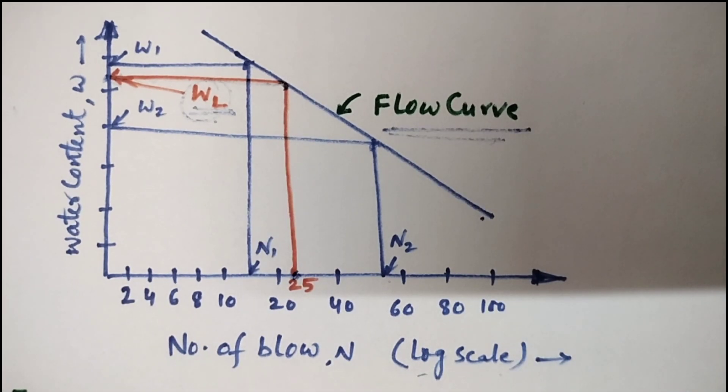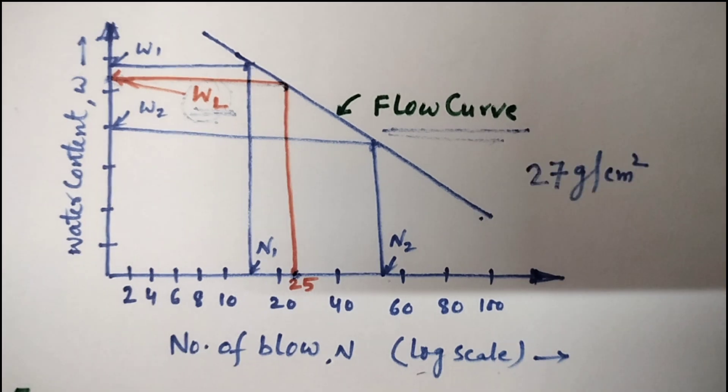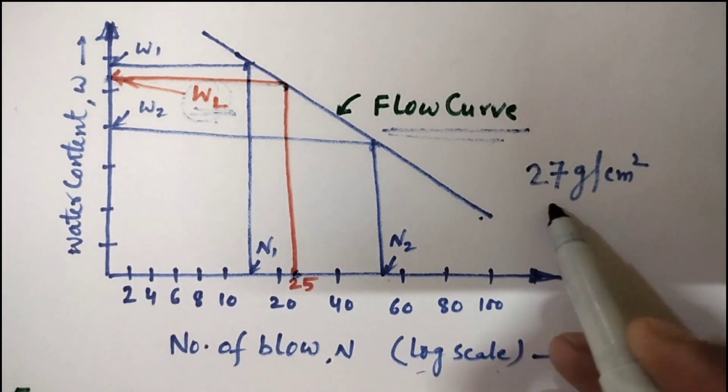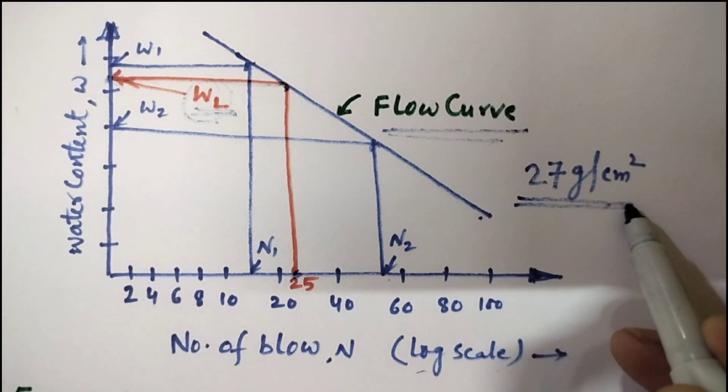Remember, from the definition of liquid limit, all soil possesses the same value of shearing strength at liquid limit and it is about 27 gram per centimeter square.